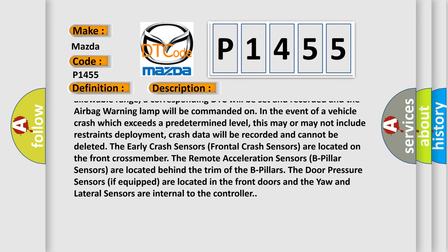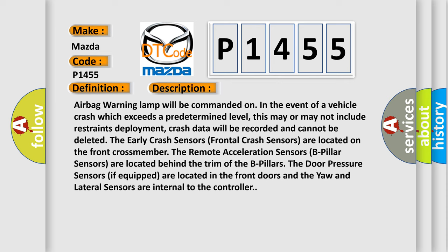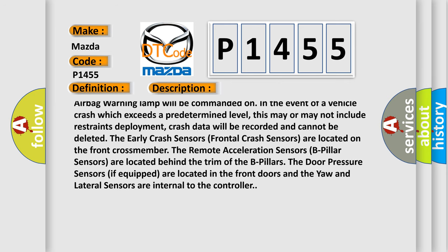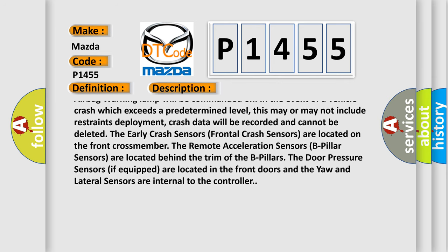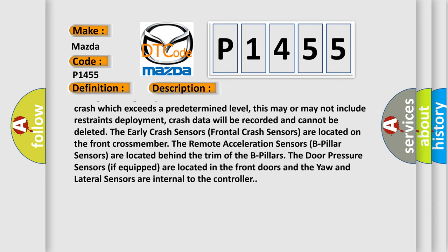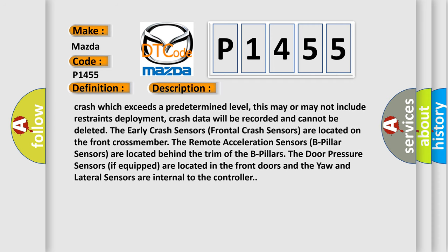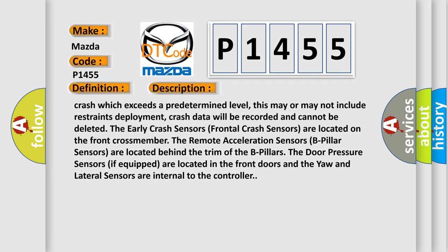In the event of a vehicle crash which exceeds a predetermined level, crash data will be recorded and cannot be deleted. The early frontal crash sensors are located on the front crossmember, the remote acceleration B-pillar sensors are located behind the trim of the B-pillars, the door pressure sensors if equipped are located in the front doors, and the yaw and lateral sensors are internal to the controller.